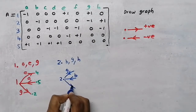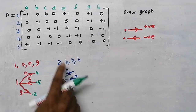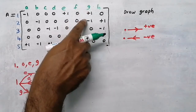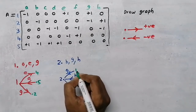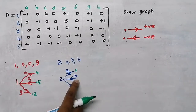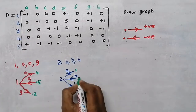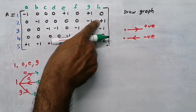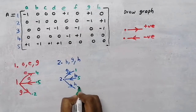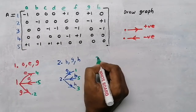Branch h is positive - positive means it is moving away from the node. Now I need to know the end points where the branch is going to end. For branch g, look at the column: minus one is here and plus one is at node 1, so my end point will be at node 1. Branch b: minus one is here, plus one is at node 5, so the other end will be at node 5. Branch h: plus one is here and minus one is at node 3, so my end point will be at node 3.